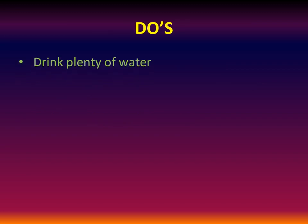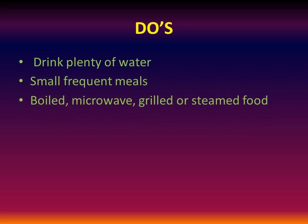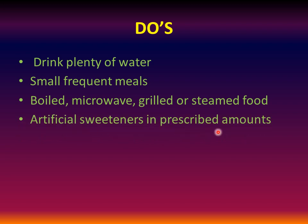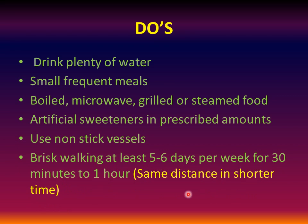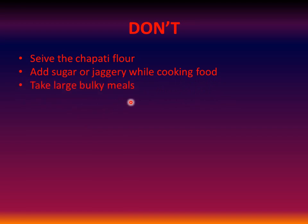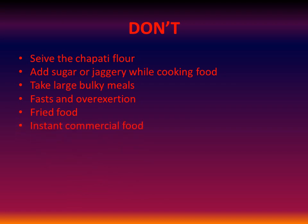Do's: drink plenty of water; have small frequent meals; boiled, microwaved, grilled, or steamed food is better than fried food; artificial sweeteners in prescribed amounts are permissible; use non-stick vessels; and do brisk walking at least 5 to 6 days per week for 30 minutes to 1 hour. Don'ts: don't sieve the chapati flour; don't add sugar or jaggery while cooking; don't take large bulky meals; don't fast or overexert; don't consume fried food; and don't take instant commercial food.